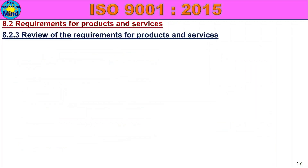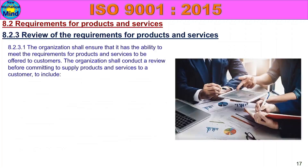8.2.3 Review of the Requirements for Products and Services. First additional subclass, 8.2.3.1: the organization shall ensure it has the ability to meet the requirements for products and services to be offered to customers. The organization shall conduct a review before committing to supply products and services to a customer. When there is a new product inquiry, the marketing department, design department, and project department will discuss the product and confirm the capability. So the company reviews before accepting the order.